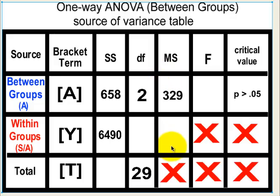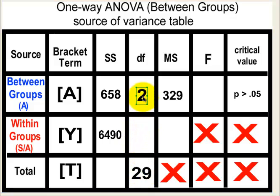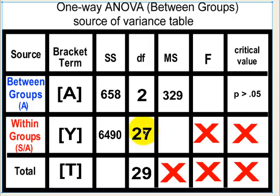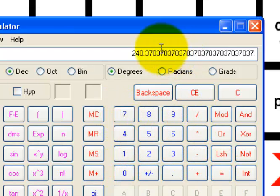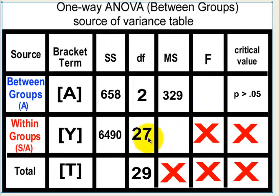This next empty box has no mean squares. But the degrees of freedom column: 2 plus some number equals 29, so 2 plus whatever this number is equals 29 — it's a no-brainer, it's 27. Now we have the degrees of freedom. So we're going to take the sum of squares within groups divided by the degrees of freedom within groups: 6490 divided by 27 equals 240.4.